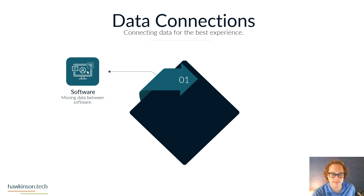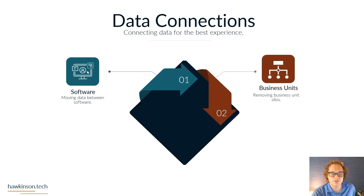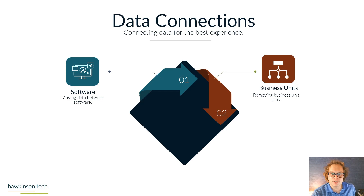Data connections can also address business silos. As we were just talking about with the sales app and the finance app, those are two different business units. There would likely be business processes in place to eventually get them to communicate, but by having the data connections we can make that happen a lot quicker. In addition, by connecting data and sharing the same story, we can also remove data silos from people working on similar things or people who need data for similar initiatives.